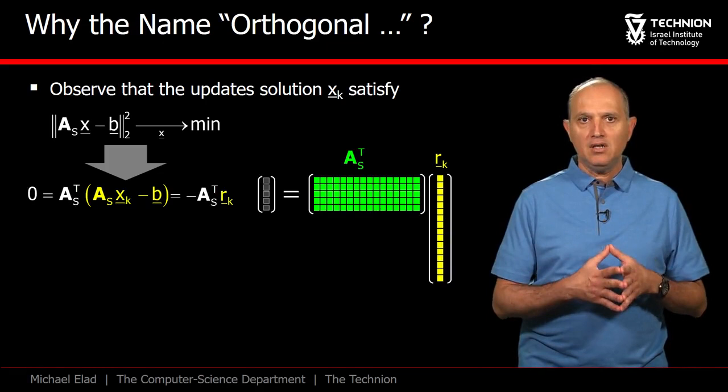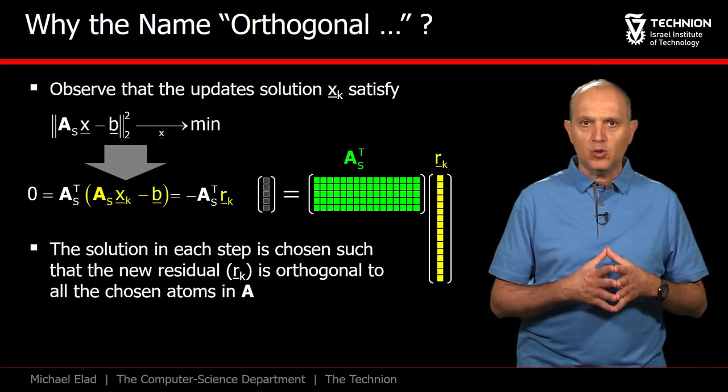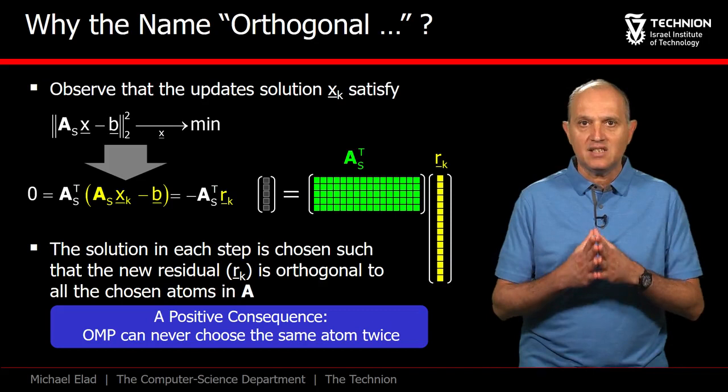The yellow term is nothing but the new updated residual. This means that, after updating the solution xk, the inner product of the new residual is orthogonal to the atoms in the support, being the rows of As transpose.